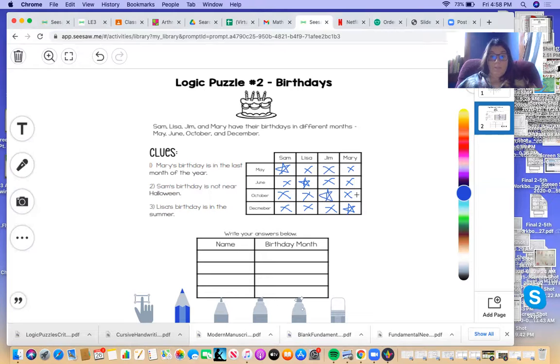So see how we only need three clues and we can figure it all out. And then we can write here. We can put their names again. Sam. His birthday is in May.